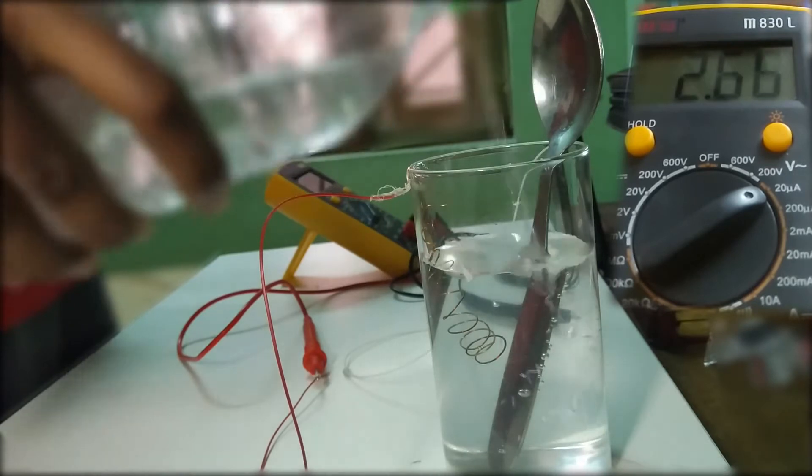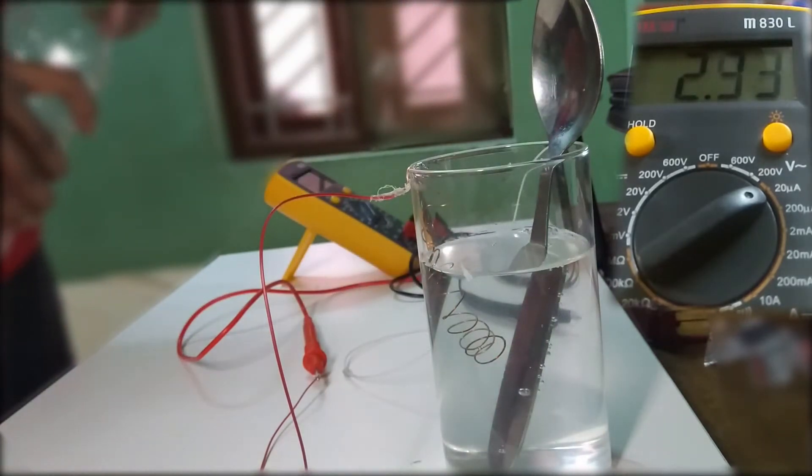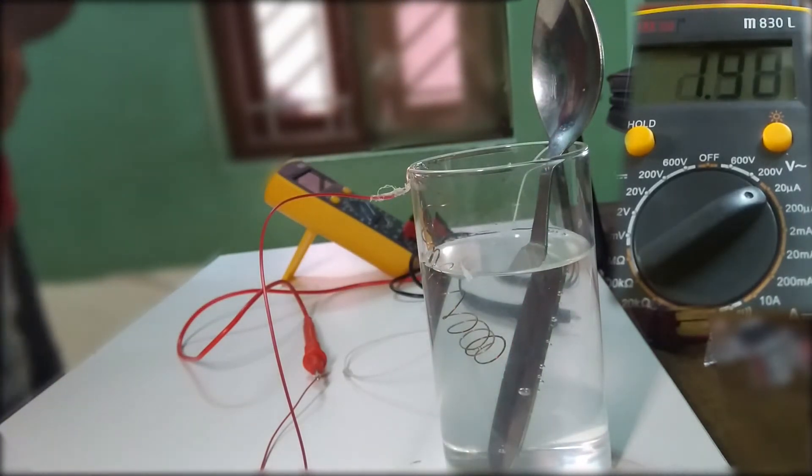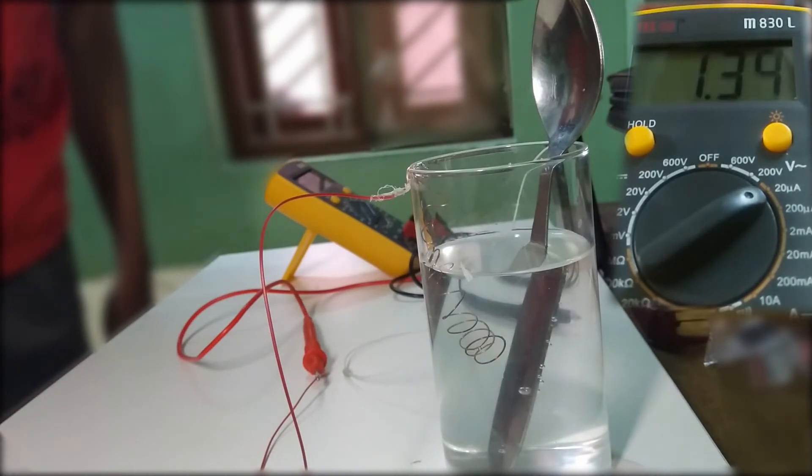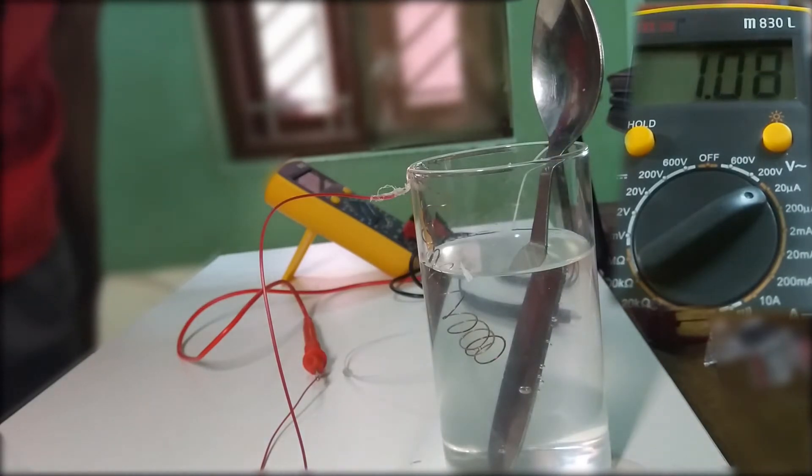As you can see, the current starts to increase. And there may be two types of audience out there, one being people wondering what's exactly happening, so you guys just keep wondering. And the other guys would be like, there should be some leakage current out of the multimeter.